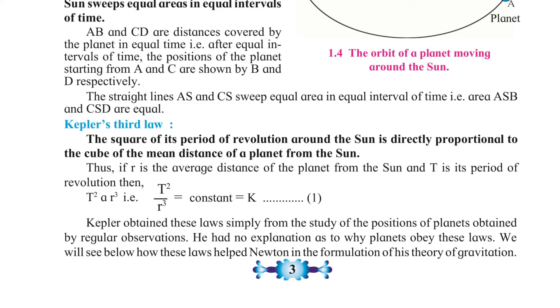Kepler obtained these laws simply from the study of the positions of planets obtained by regular observations. He had no explanation as to why planets obey these laws. We will see below how these laws helped Newton in the formulation of his theory of gravitation.